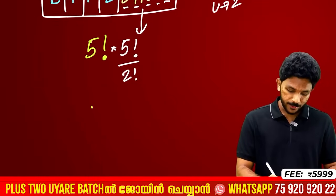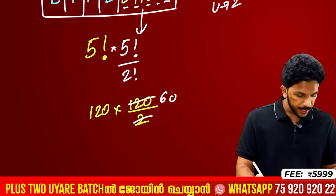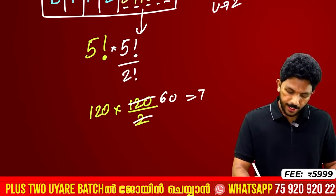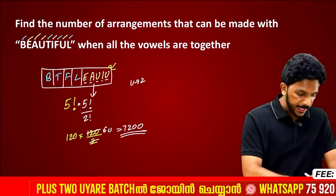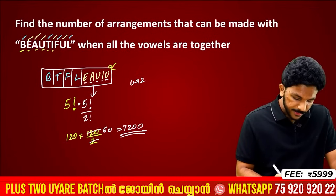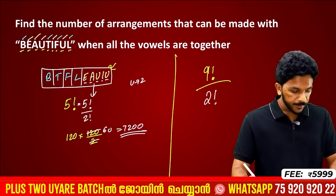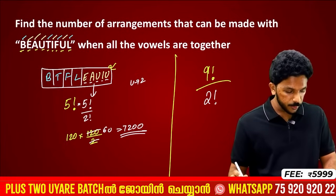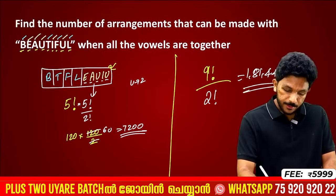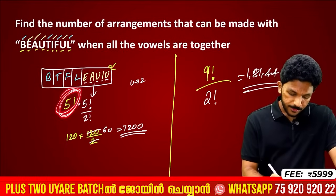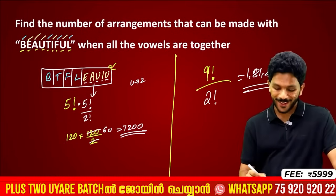So the arrangement with vowels together is 5! × (5!/2!) = 120 × 60 = 7,200. But wait — in normal conditions, 9! ÷ 2! (for repeated U) = 362,880 ÷ 2 = 181,440. The vowels-together answer comes out to 7,200.